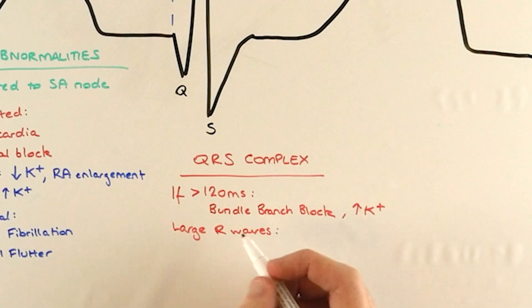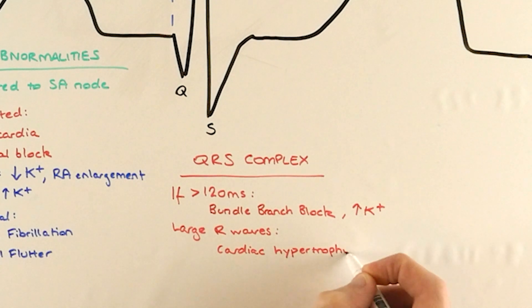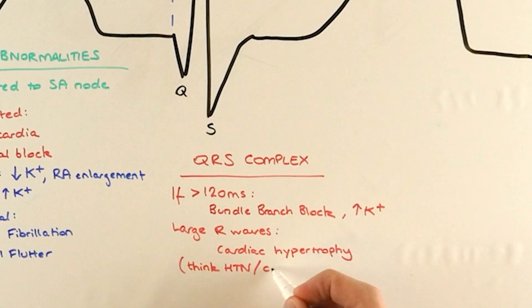If the amplitude of this complex is really big, this also could suggest cardiac hypertrophy, enlargement of the heart muscle which we might see in conditions like chronic hypertension or hypertrophic cardiomyopathy.